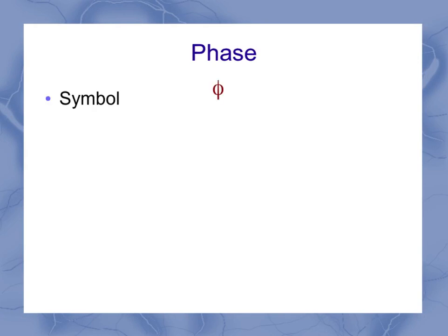Then we get to phase. It has a symbol of the Greek letter phi. Sometimes it's called phase, sometimes it's called phase shift, sometimes it's called phase constant. You might see some different names represented for it there.